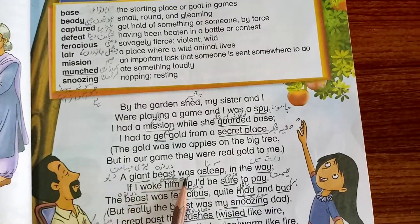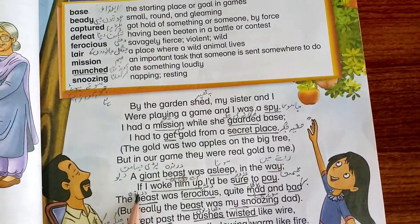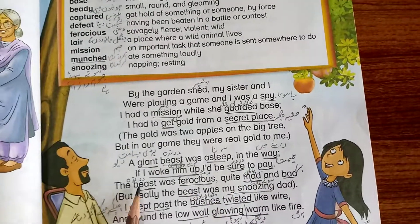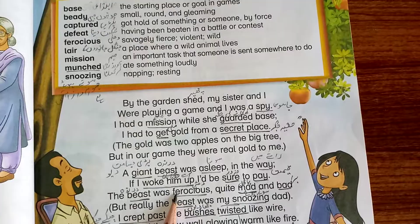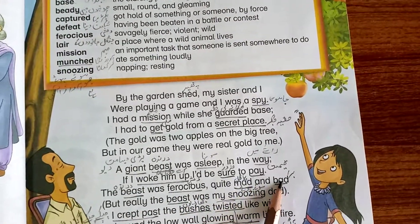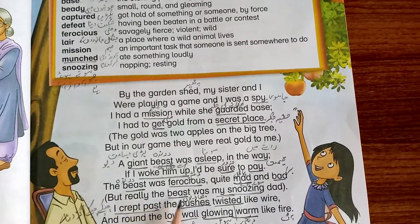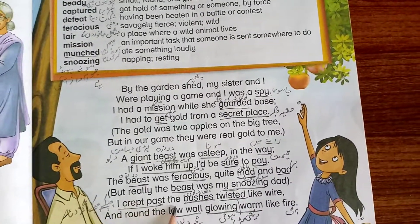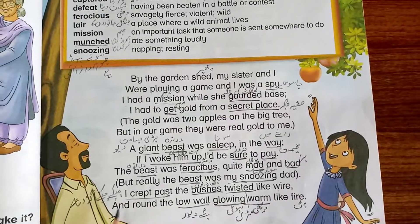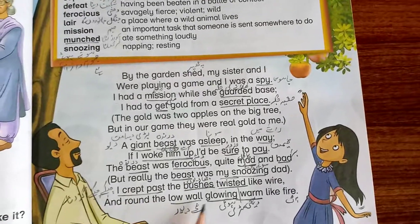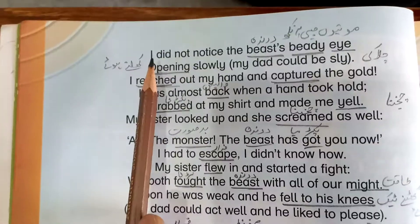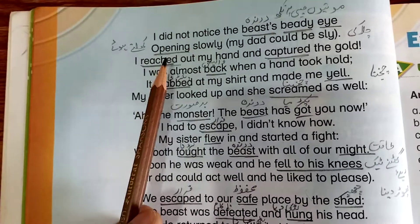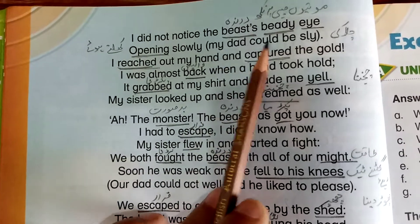A giant beast was asleep in the way. If I woke him up I would be sure to pay. The beast was ferocious, quite mad and bad. But really the beast was my snoozing dad. I crept past the bushes, twisted like wire, and round the low wall glowing warm like fire. I did not notice the beast's beady eye opening slowly — my dad could be sly.